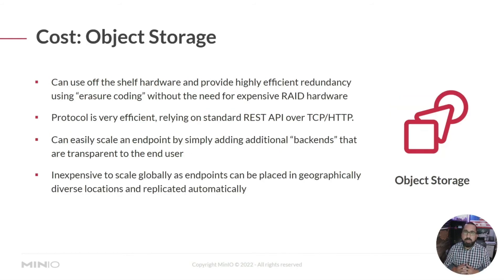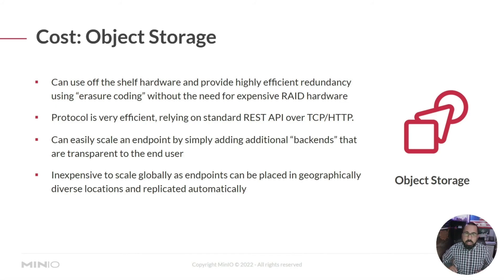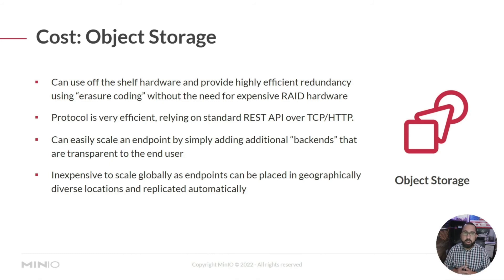Now let's talk about the cost of object storage. The nice thing about object storage is that it can use off-the-shelf hardware and provide highly effective redundancy using what's called erasure coding. In most cases — MinIO uses this, for example — there's no need for expensive RAID hardware. This lets you cut away from hardware costs and put that budget into additional data storage, such as buying extra drives instead of a RAID card. The protocol is also very efficient, relying on standard REST API over TCP and HTTP.